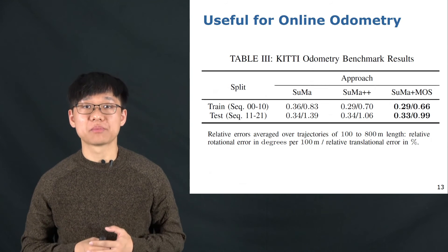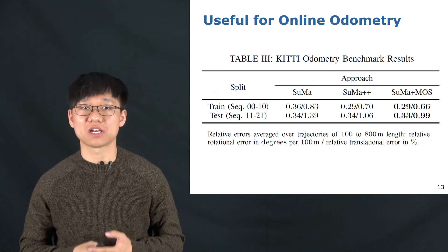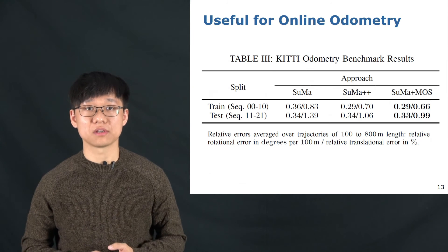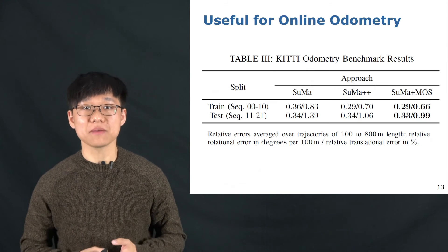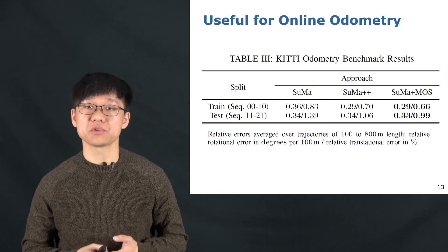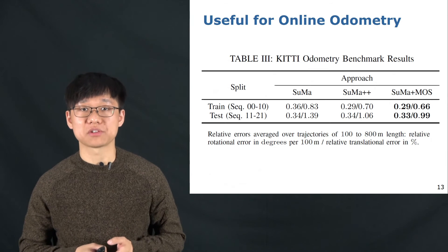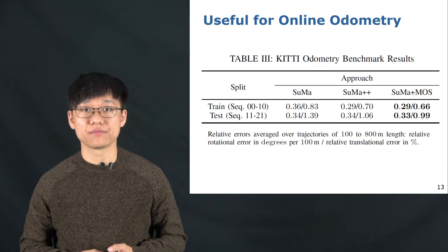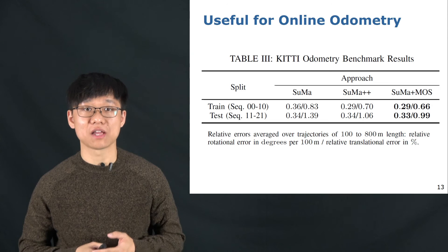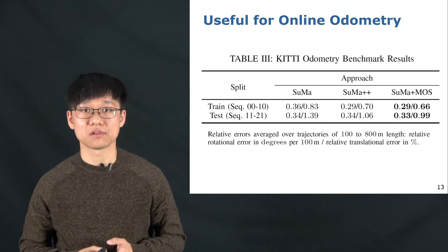Here I show that the proposed method is also useful for downstream tasks like odometry. This table shows the evaluation of the odometry results on the KITTI odometry benchmark. The number before the slash is the rotation error and after is the translation error.